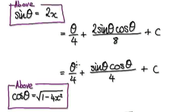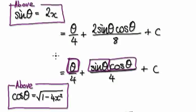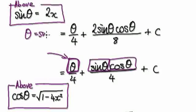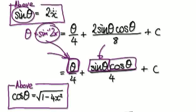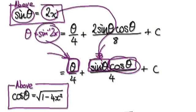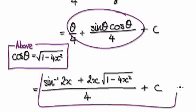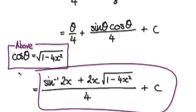Now we need to replace θ, sin θ, and cos θ. For θ, we use arcsin(2x). For sin θ, we use 2x. For cos θ, we said earlier that cos θ = √(1-4x²), so we substitute that in. This whole expression then becomes the final answer in terms of x. This is your final answer. Thank you.